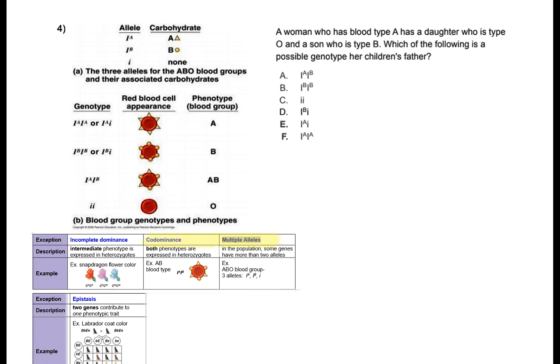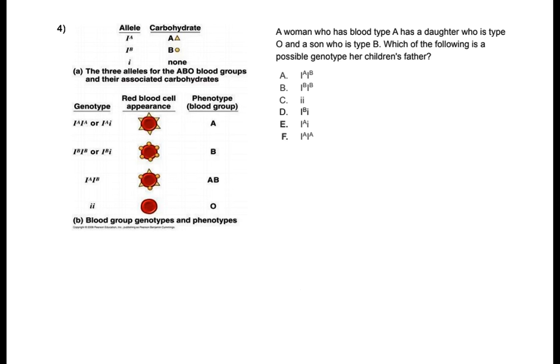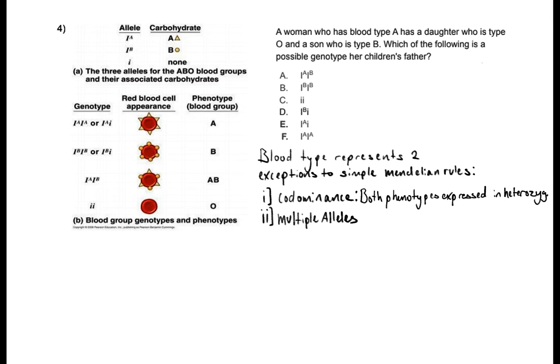So now that we got our table filled out here I'm just going to copy and paste the two exceptions that we see here for blood type. We see two exceptions to simple Mendelian rules. We see codominance and we also see multiple alleles and just like we discussed both phenotypes are expressed in heterozygous individuals that are codominant and when you have multiple alleles you have a gene that can have more than two alleles.